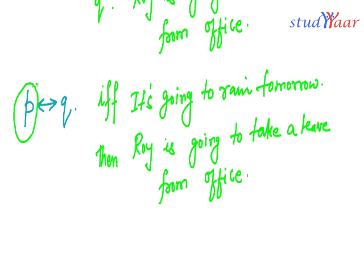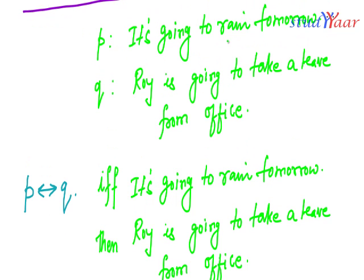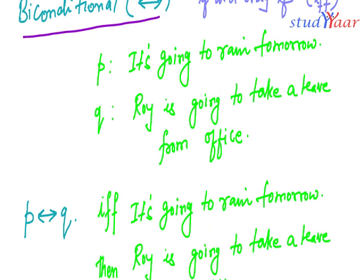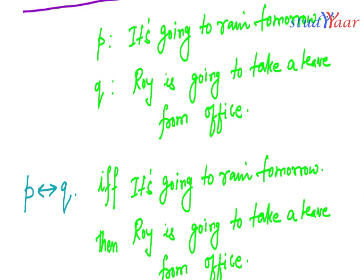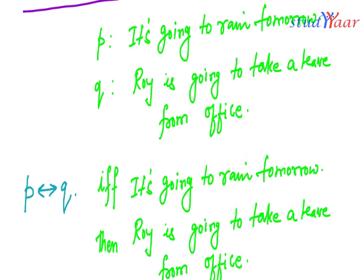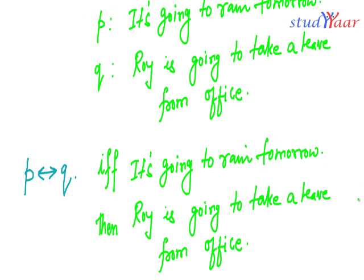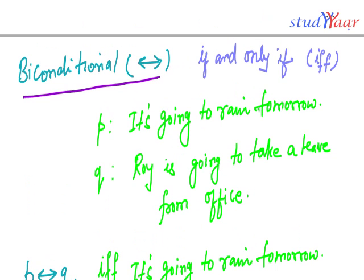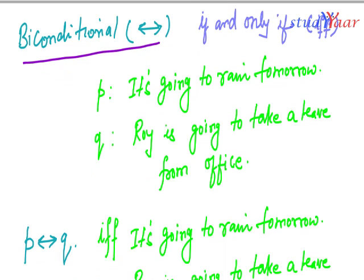Here I have already decided that P is the only condition that will ensure Q. In other words, rain tomorrow is the only necessary and sufficient condition for Roy to take a leave from office. That is why we call this the 'if and only if' or bi-conditional connective.